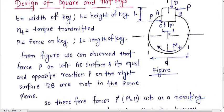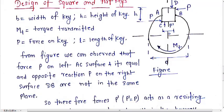P is the force on the key from left to right, as shown here in plane AC. Because the torque is clockwise, the force on key will be from left to right. From the figure, we can observe that P on the left AC surface is equal to opposite reaction P on the right side for equilibrium condition.